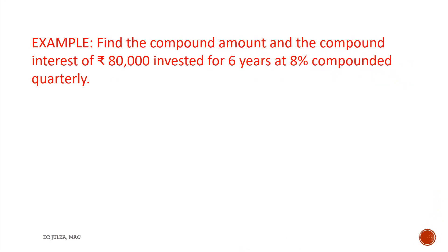One more example on compound amount and compound interest. In this example, we want to find out the compound amount and compound interest of rupees 80,000 invested for 6 years at a rate of interest 8% compounded quarterly.